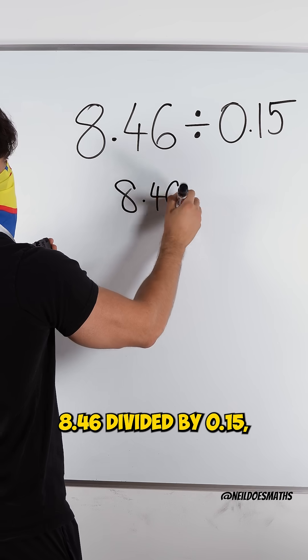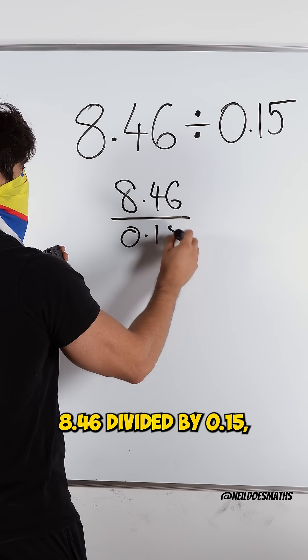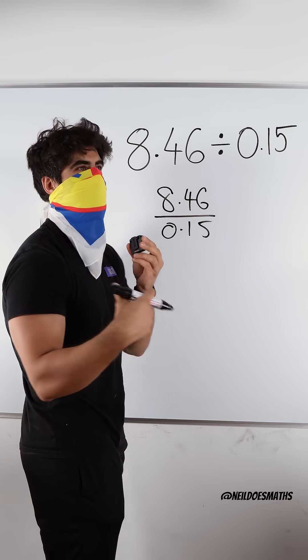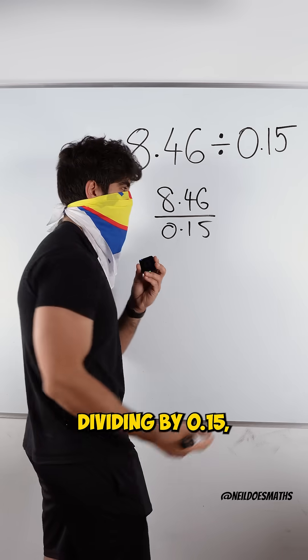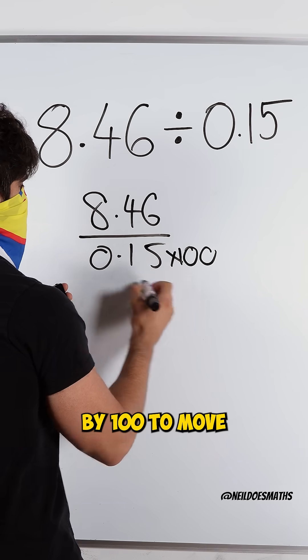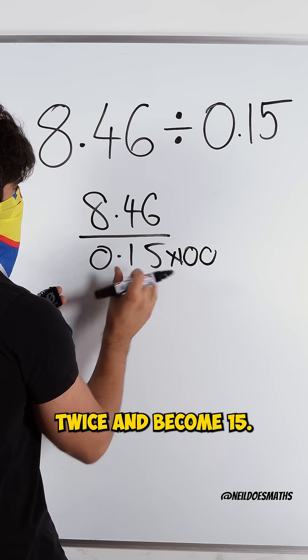So if I say it's 8.46 divided by 0.15, instead of dividing by 0.15, I could multiply it by 100 to move the decimal place twice and become 15.